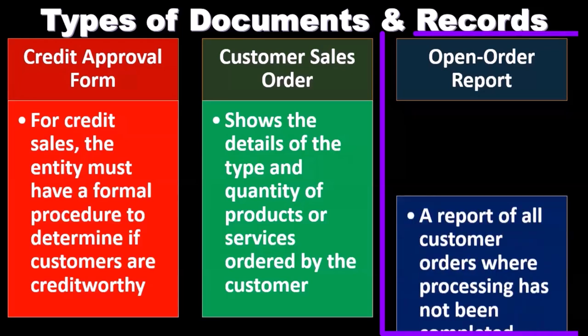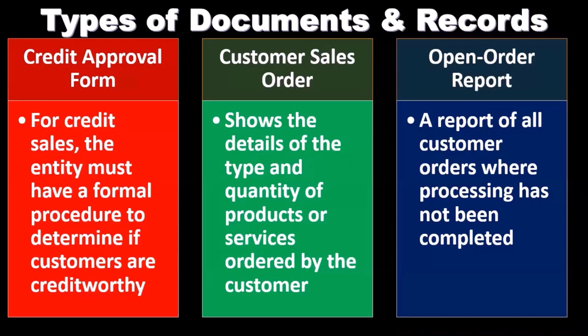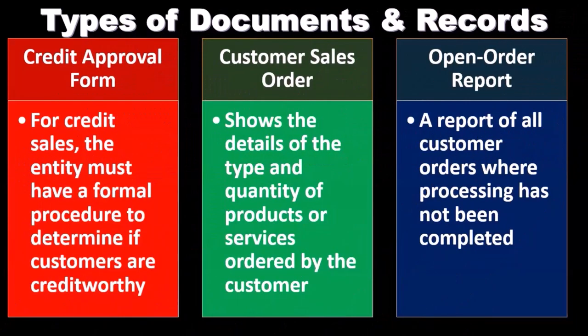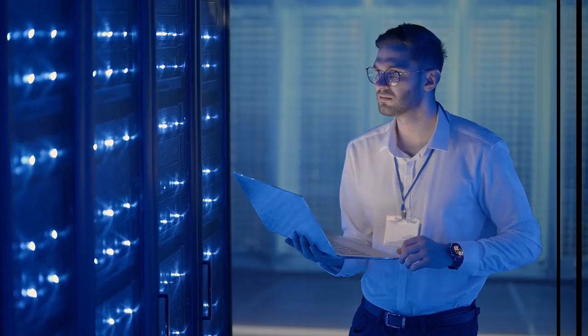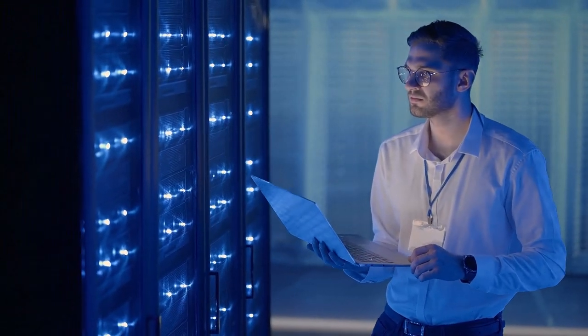Then we have the open order report. This is a report for all customer orders where processing has not yet been completed. We need to know what the open order report is because if the work has not yet been done, we typically shouldn't be recording the revenue until the point in time the work is done. So we need to know what the system is — when revenue is going to be recognized when the work is done — so that we can test that system.